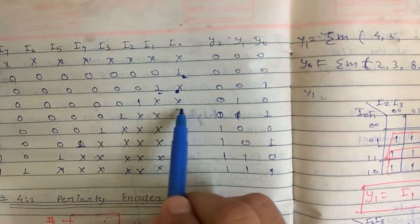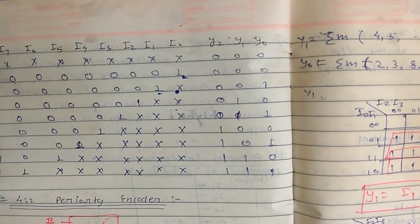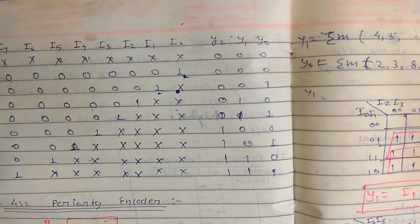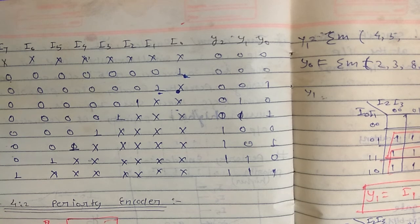You can make the boolean expression for the priority encoder. This is all about combinational circuits. In the next video we will start with sequential circuits.